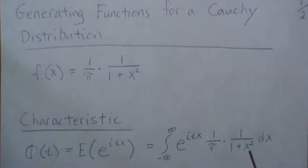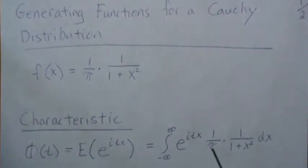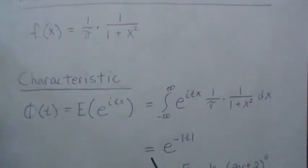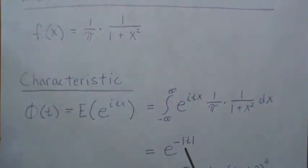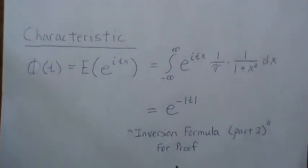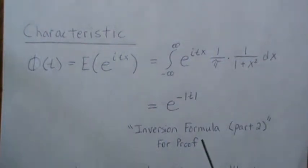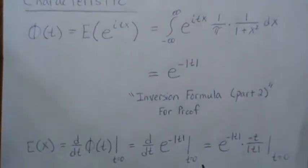So it poses problems and it's not straightforward to integrate. I'm going to show you the answer, which is e^(-|t|), and point to a video I put out the other day called Inversion Formula Part 2 for a proof of this derivation. We'll leave it at that and not re-derive it in this video.